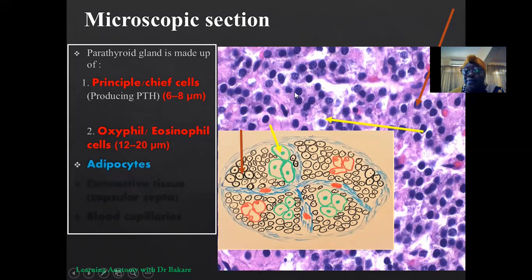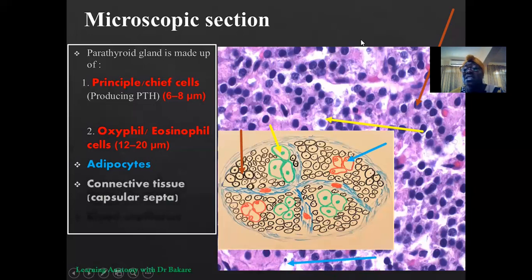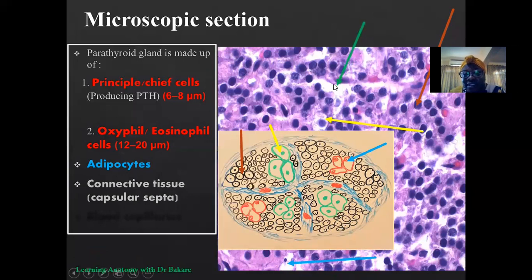Then we have the adipocytes. The adipocytes tend to be seen as age advances. This is the fat cell — the adipocytes seen within this section. Then we have the connective tissue. The connective tissue surrounds the parathyroid gland, and drives into the gland to divide it into lobules. You can see the region highlighted in blue here — it surrounds the gland giving it a protective function, protecting the entire surface of the parathyroid gland, while also penetrating the gland and dividing it into lobules. This is the connective tissue in the histological section.